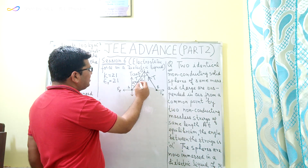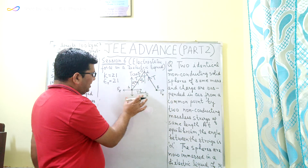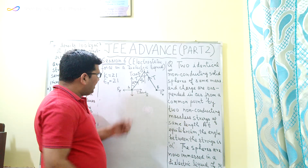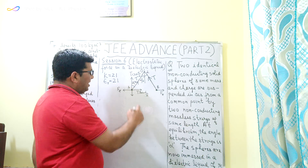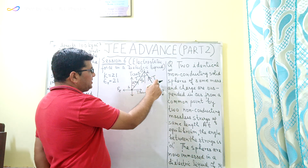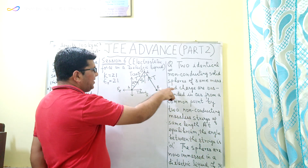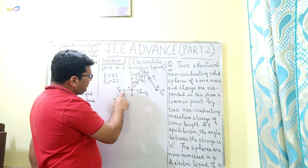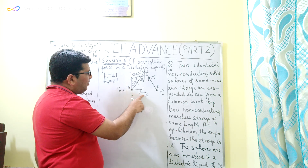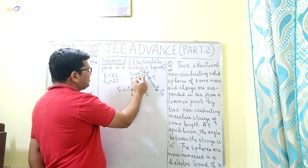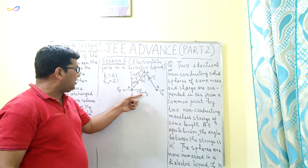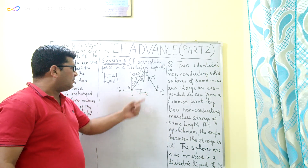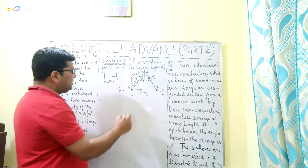The tension always acts away from the body, so the direction of tension is as indicated by the two arrows. For solving this question, I have taken only sphere A. In the first case, this entire system is suspended in free air, and the electrostatic force will be balanced by the horizontal component of the tension in the string. I have resolved the tension into two components — one vertical and one horizontal — so this horizontal component balances the electrostatic force.